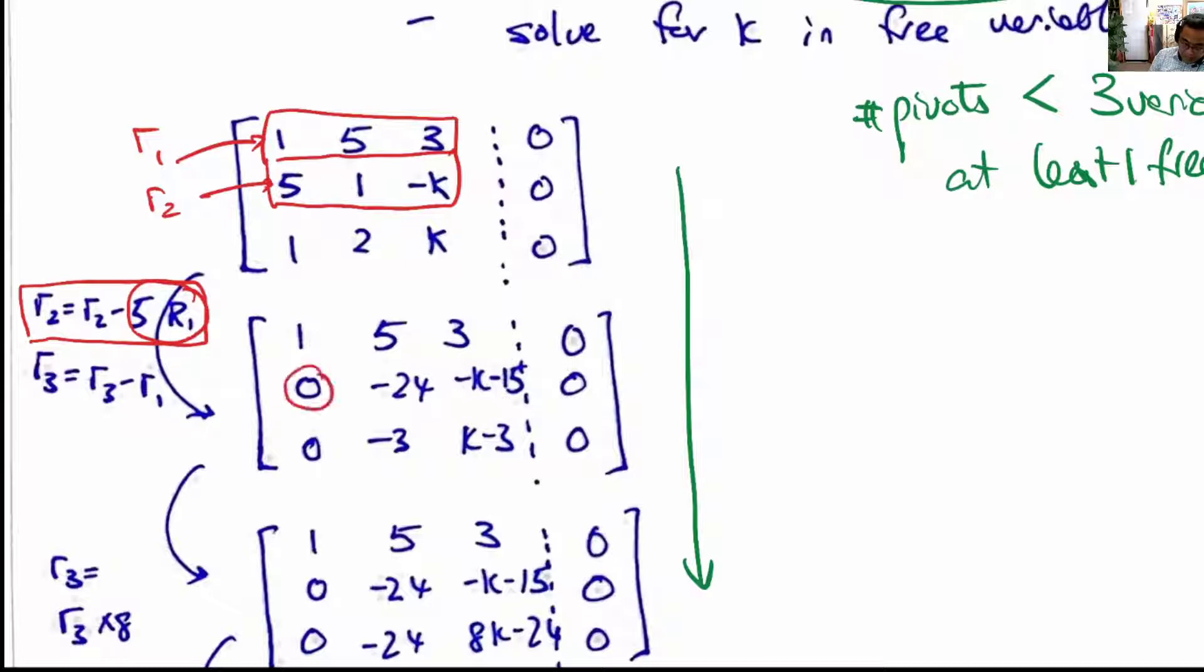Basically we are getting rid of the first element of the second row to make it zero, to make the matrix into row echelon form.